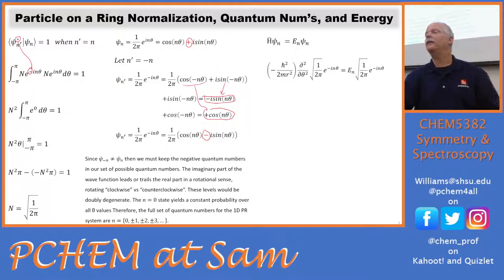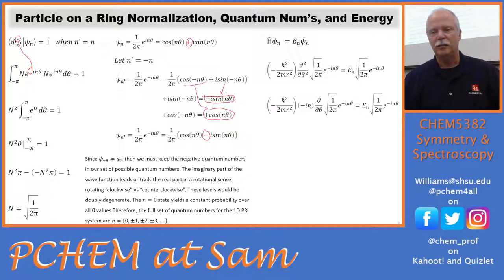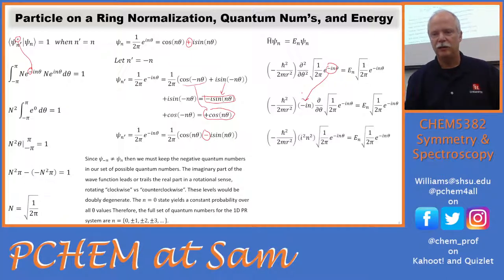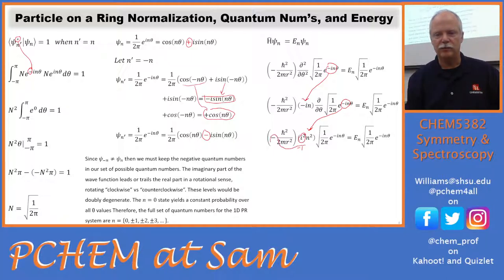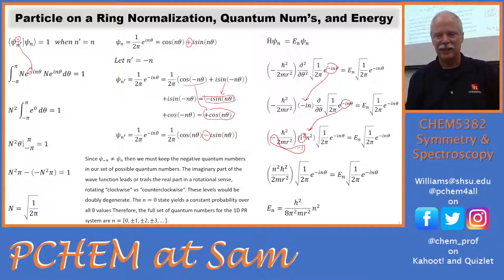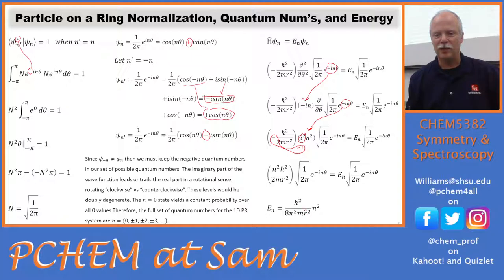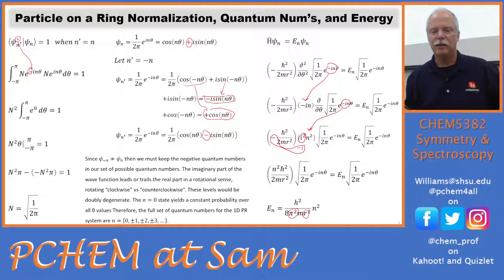Taking the first derivative of e to the minus inθ brings the coefficients out front. The second derivative brings them out again and they're squared. This is beautiful because i² = −1, and that minus one cancels the other minus one, giving us real and positive energies. The energy equation looks very similar to the particle in the box, except instead of the length of the box we have r² — the radius of the ring squared — and the quantum number squared. It's a rotational system so there's a π in there.